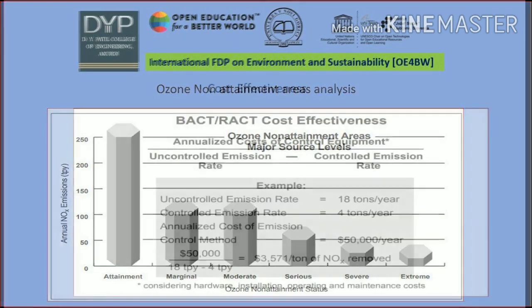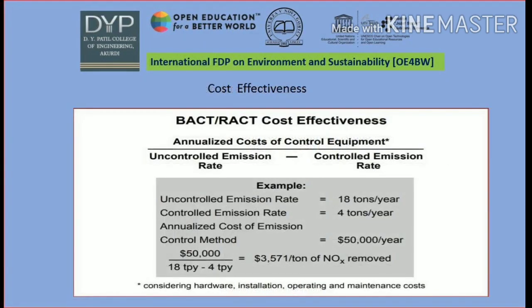We can calculate the cost effectiveness. The example covers the uncontrolled emission rate, controlled emission rate, cost of emission per year, and controlled methods. We can calculate these using the national ambient air quality standards.